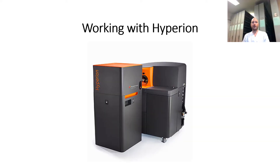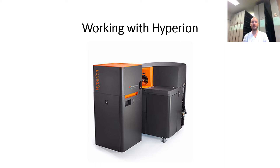Working with Hyperion involves several different steps, starting with selection of antibodies that you want to use, followed by applying a master mix with all the antibodies to tissue samples. Then the tissue slides are put into the Hyperion machine itself. For this first part I want to explain a little bit about the machine itself and how it works. For the next part I'll go through in more detail the different steps before samples are put into the machine and what happens after.